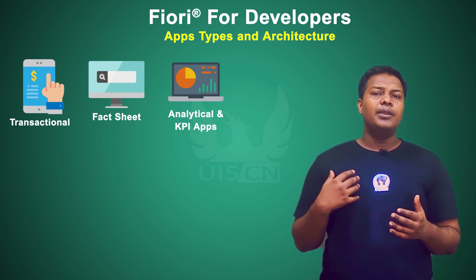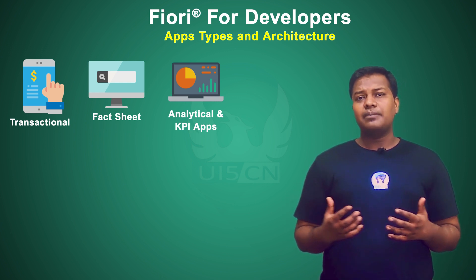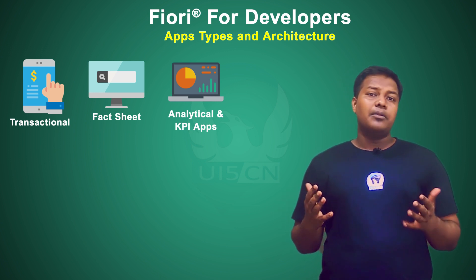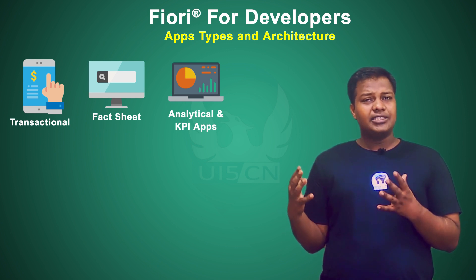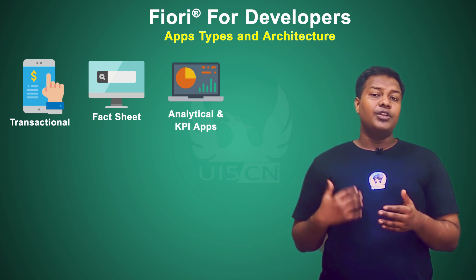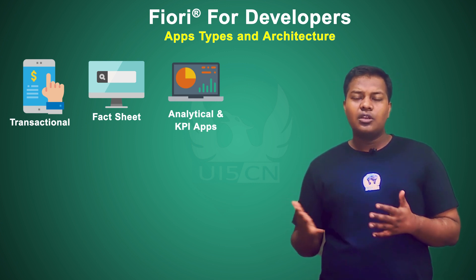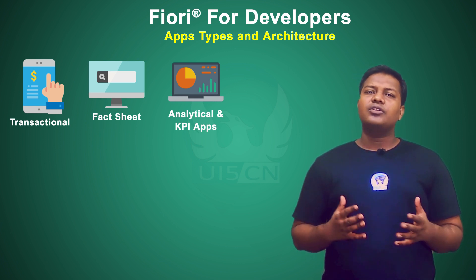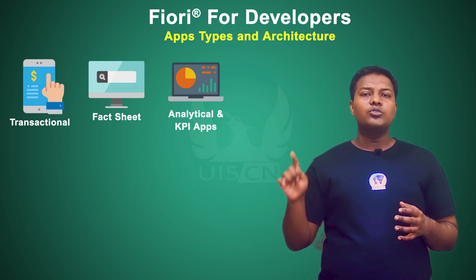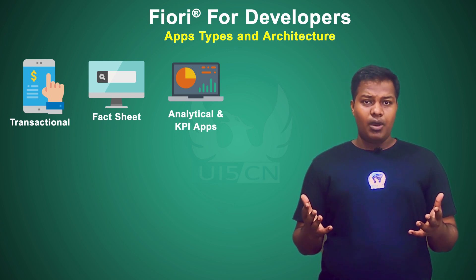These are analytics applications. There are also KPI tiles — tiles which show key performance indicators. For a business, you might have KPIs such as how many items were successfully delivered this month, how many items were not delivered, or how many customer complaints were received in a particular month or quarter. Those are KPI figures for a business, because business users might be interested in specific numbers — for example, if there are more than 30 complaints in a month, that is a warning signal.